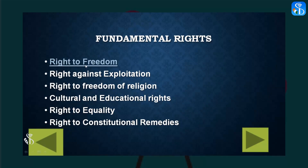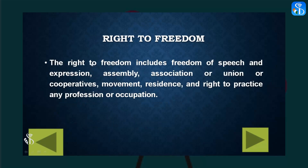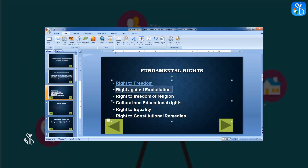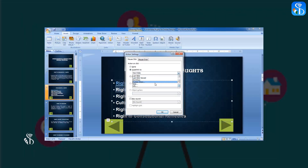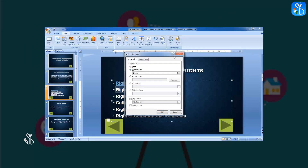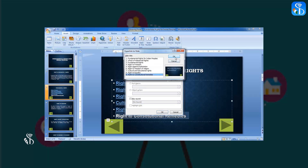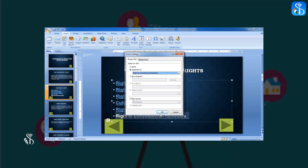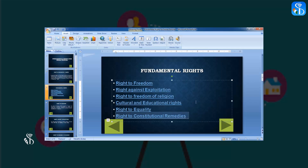When we click on this title during the presentation, that slide will be presented on screen. Repeat this process for the remaining five points as well, linking the related slides to all the other titles, then view the presentation to check the result.